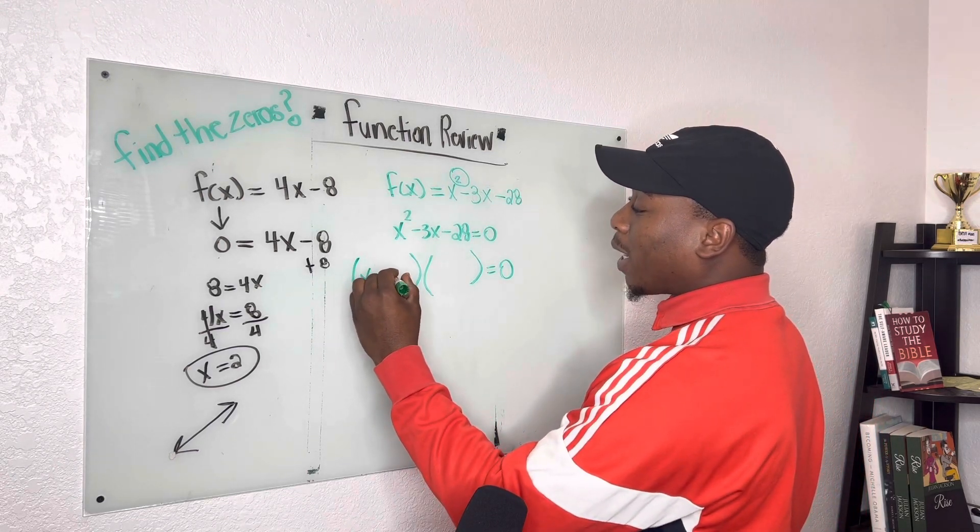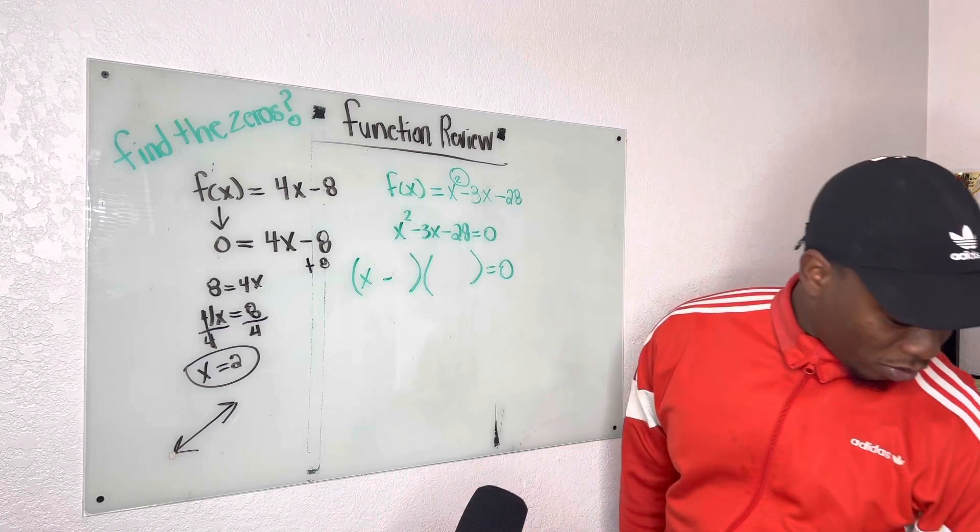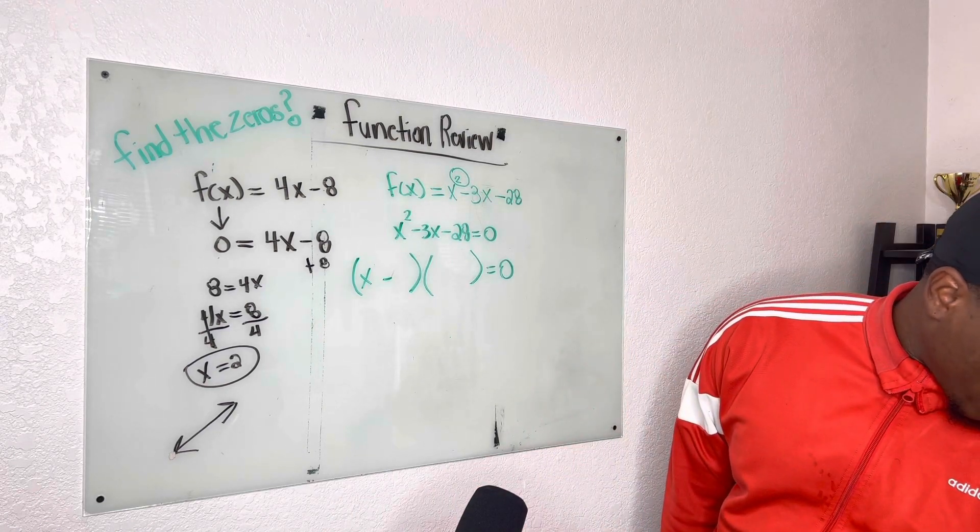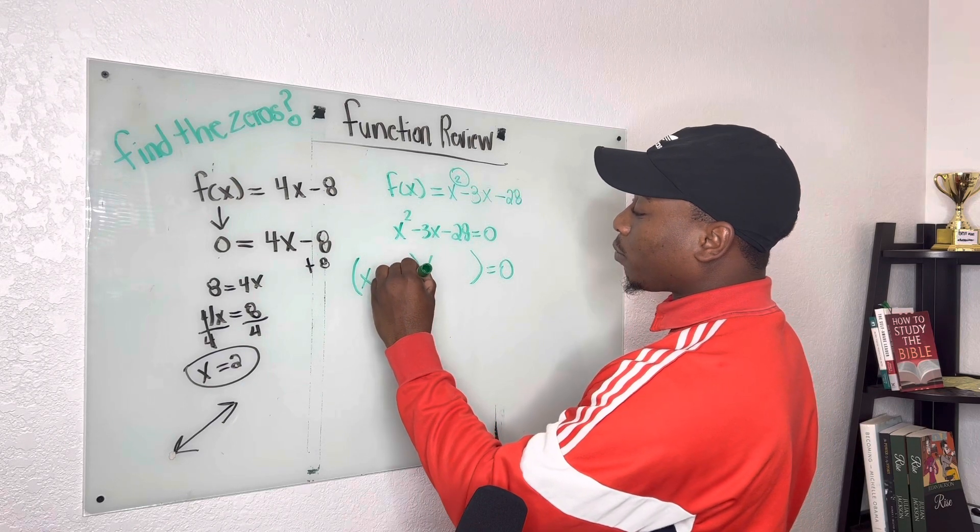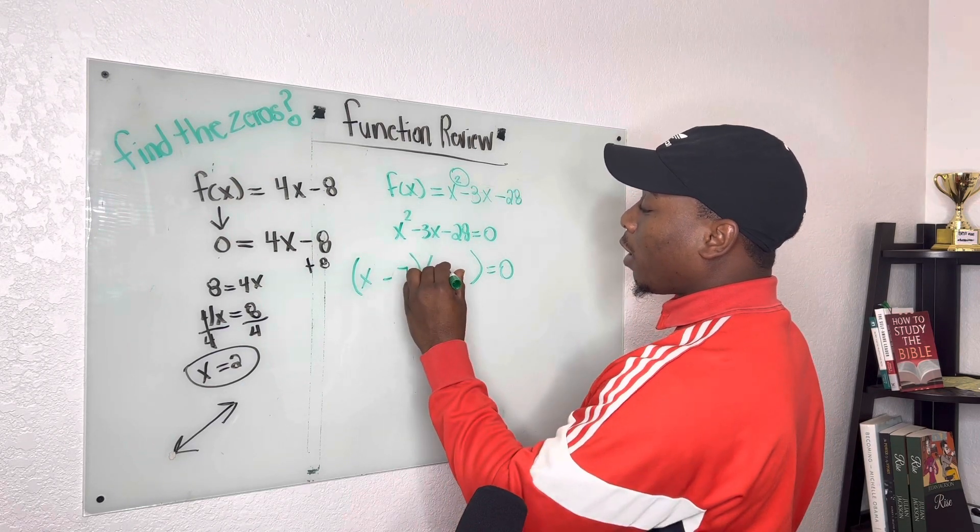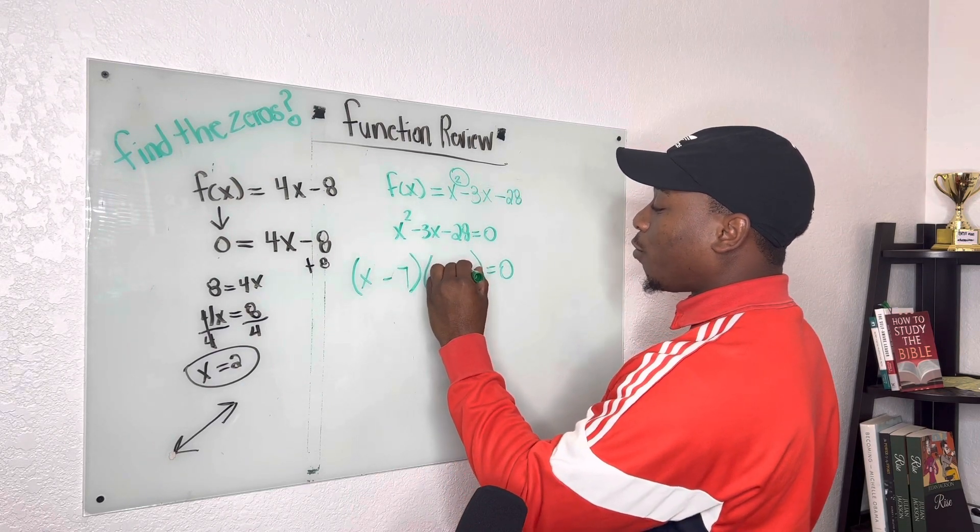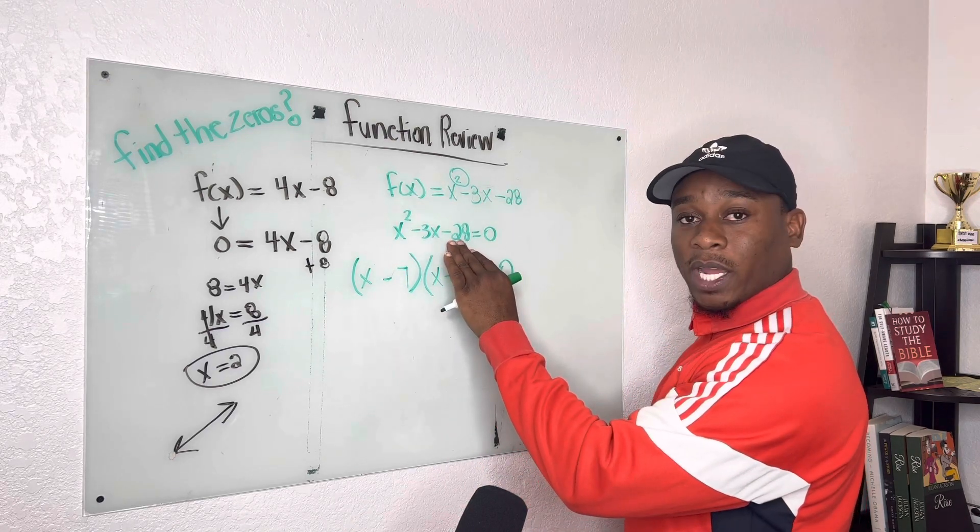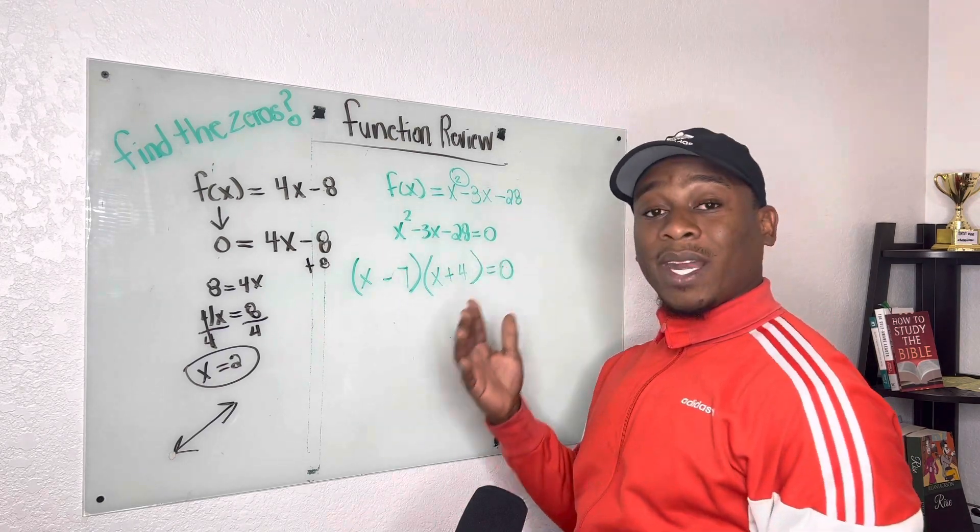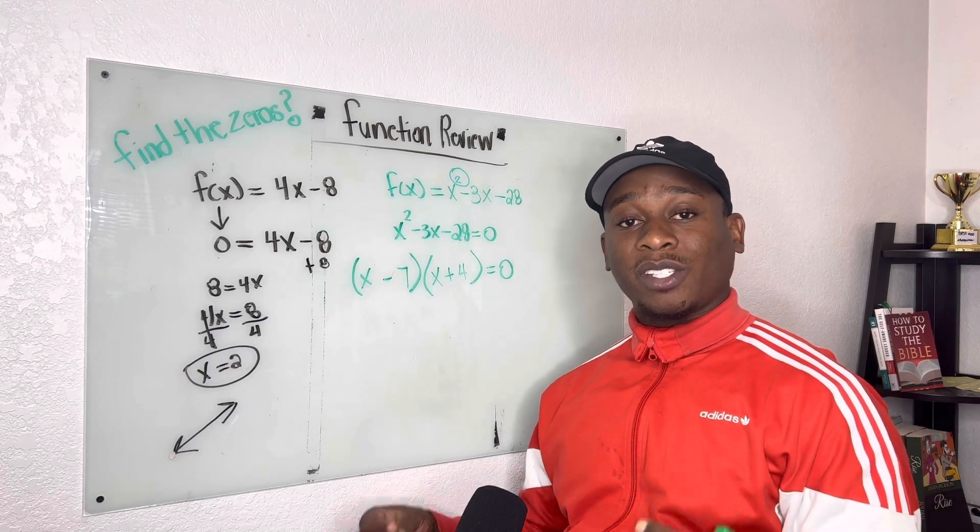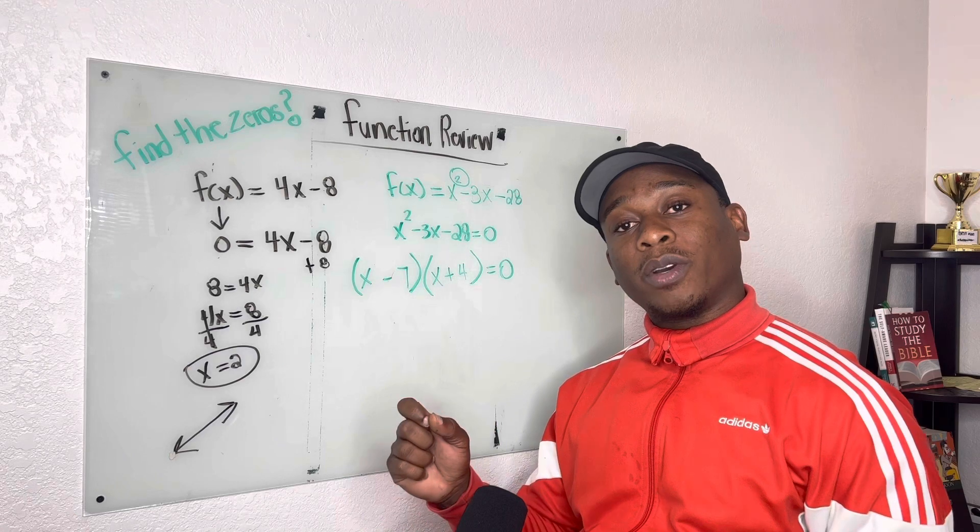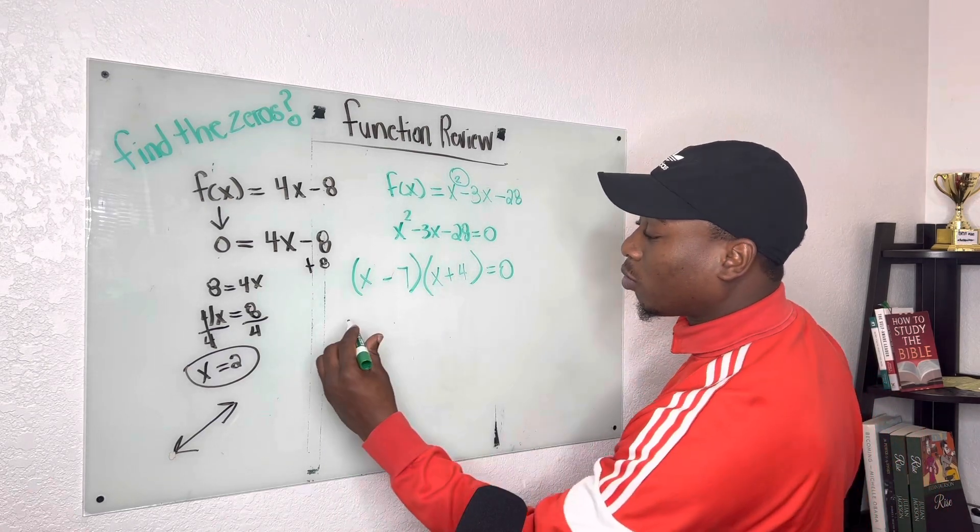And our students get this wrong because they forget to set their factors to 0. So we're going to have x minus, and let's make sure this is right. I think I have my sign. Oh no, that's right. We have x minus 7, and x plus 4. So when we multiply, we'll get negative 28, and when we add, we'll get negative 3. Every student will get to this point, but don't forget this very key point. It's set equal to 0.